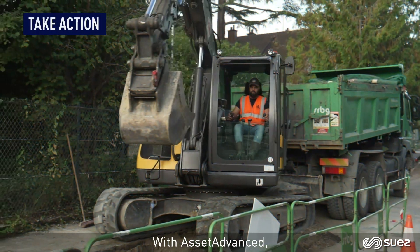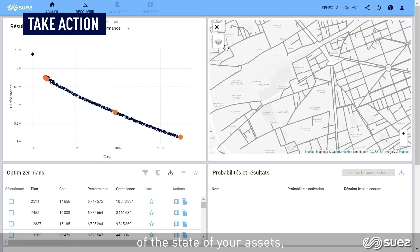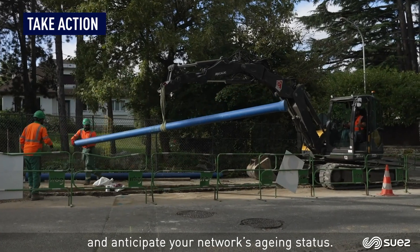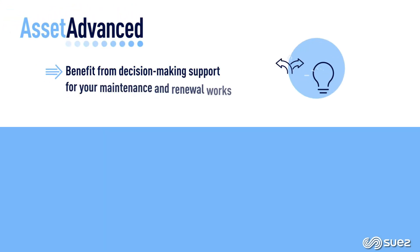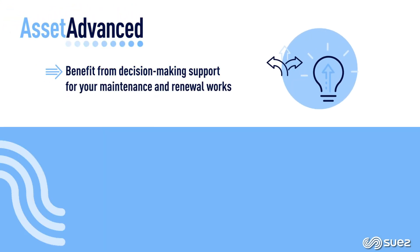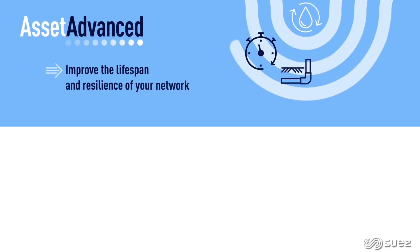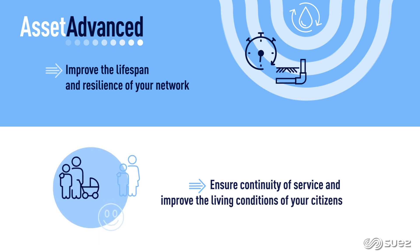Take action. With Asset Advanced, have a better understanding of the state of your assets — inspection, maintenance or renewal works — and anticipate your network's ageing status. Benefit from decision-making support for your maintenance and renewal works. Preserve the resource through better infrastructure, improve the lifespan and resilience of your network, and ensure continuity of service and improve the living conditions of your citizens.